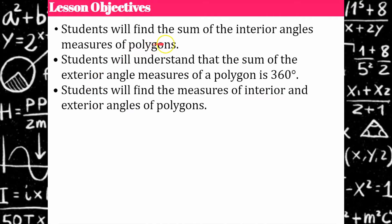Today we're going to find the sum of the interior angle measures of a polygon, and then we will understand that the sum of exterior angle measures of any polygon is 360 degrees. Then we're going to use these two concepts to find the exact measures of interior and exterior angles of any polygon.